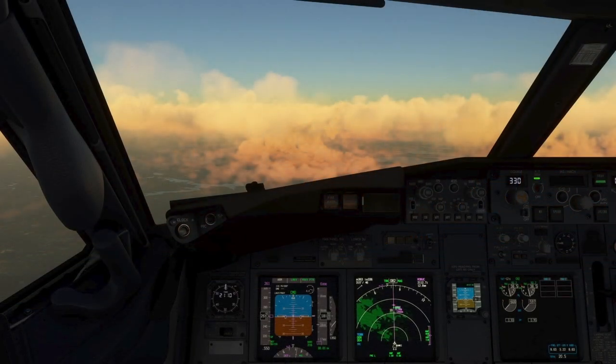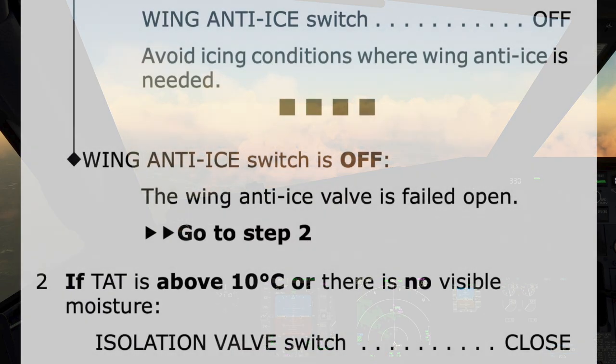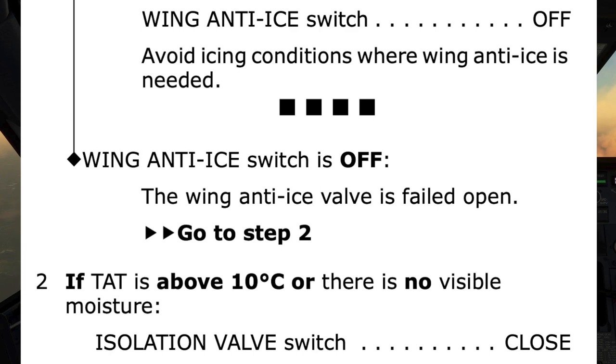Let's take a look at what the checklist would have had us do if the wing anti-ice switch had been off and the light remained brightly illuminated. If the wing anti-ice switch is off, it states that the wing anti-ice valve is failed open and directs us to go to step 2.